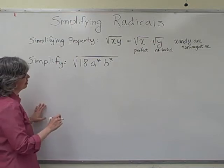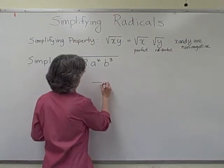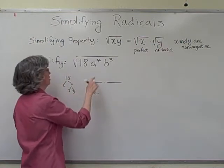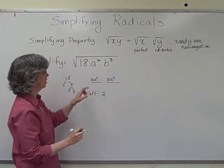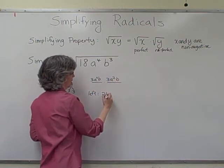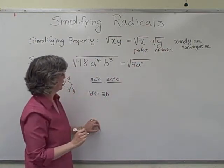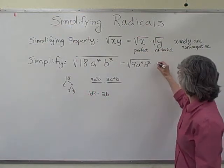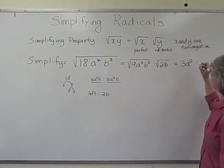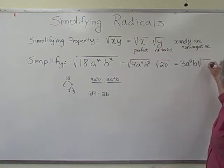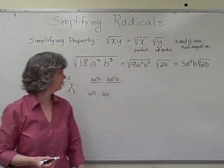Now let's simplify the square root of 18a to the 4th, b cubed. We factor 18 and think about what's perfect and what's left over. We get 3 squared times 2 left over. A to the 4th gives us a squared times a squared. B cubed gives us b times b with one b left over. So our perfect piece is 9 times a to the 4th times b squared, and our not-perfect piece is 2b. The square root of 9 is 3, the square root of a to the 4th is a squared, the square root of b squared is b, and our not-perfect piece stays under the radical.